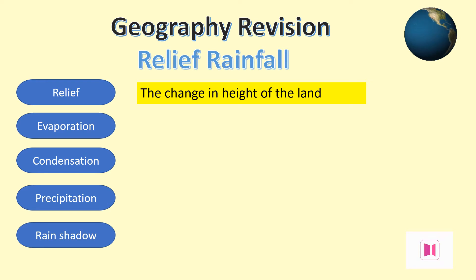Relief is actually the difference in height between the lowest and highest points in a landscape. In this case, we will be looking at how mountains affect rainfall.